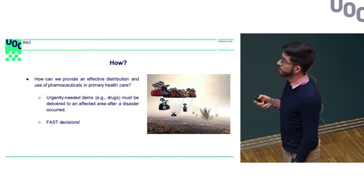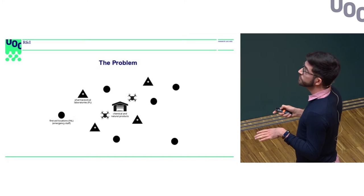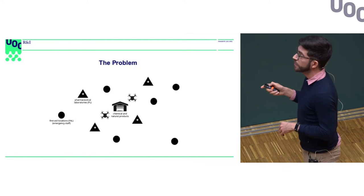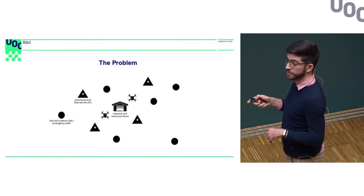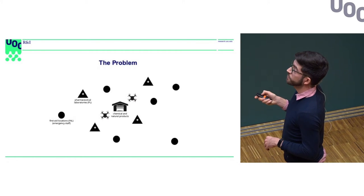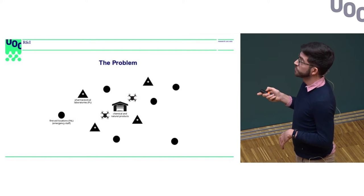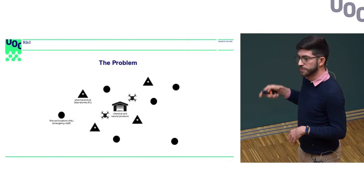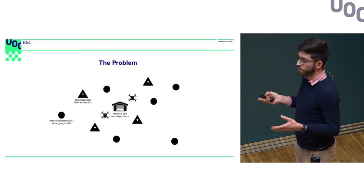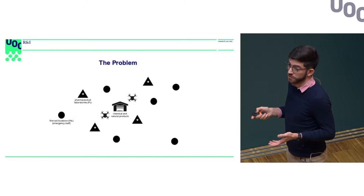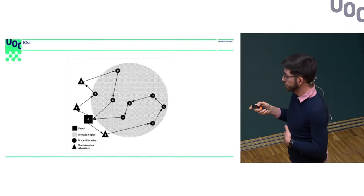We have to do this really fast because people are waiting for health treatment, so decisions must be made quickly. The specific problem has a central depot with chemical and natural products that must be delivered to pharmacies. These pharmacies produce medicines and then we deliver to emergency locations using drones, because in a disaster the roads may be destroyed and conventional cargo vehicles cannot be used.